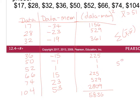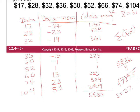Then I take 5,836 and divide by n minus 1. Since there are 9 data points, n minus 1 equals 8. That division gives 729.5. Finally, I take the square root of 729.5, and my sample standard deviation is approximately 27.01.